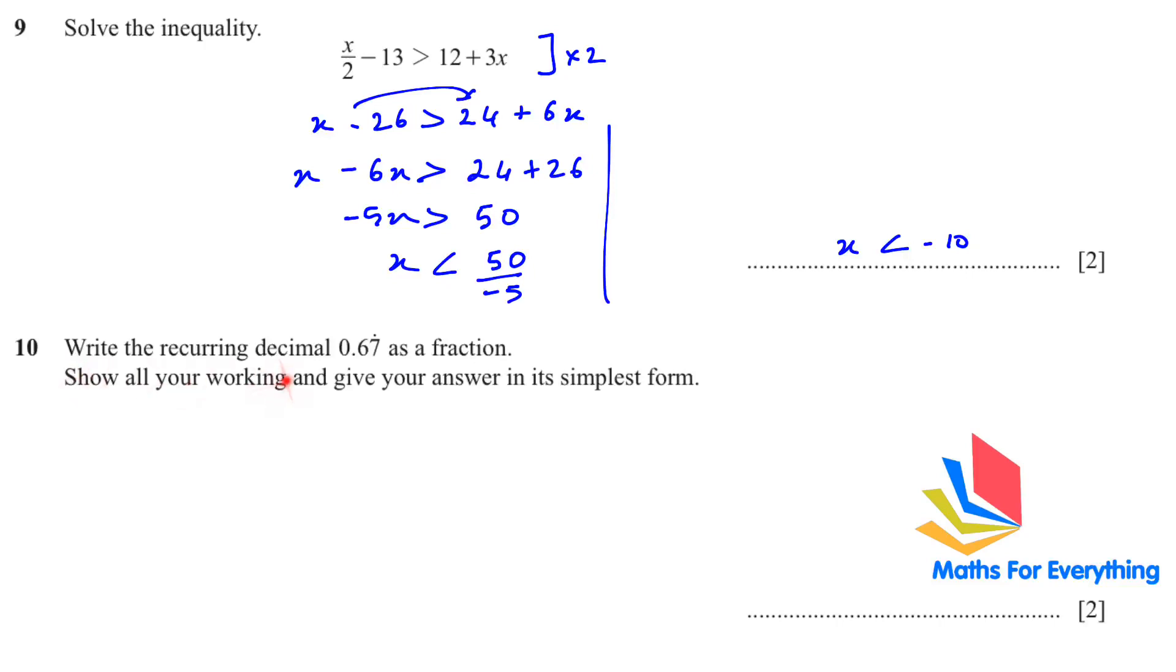Question number 10. Write the recurring decimal 0.67̇ as a fraction. So 7 is recurring. Show all your working and give your answer in its simplest form. It means 0.6777 continuous without stopping. For a question like this, first write: let x = 0.67̇. Then multiply both sides by 10. So you will have 10x = 6.7̇. The number after the decimal must be same. You have in the first place 6 and in the second 7.